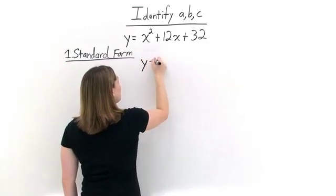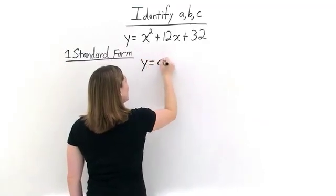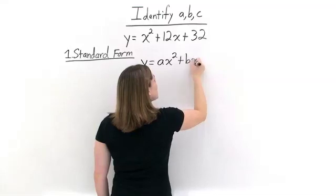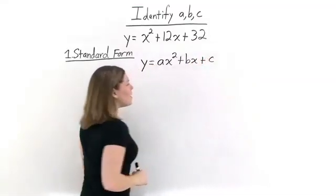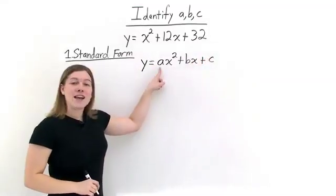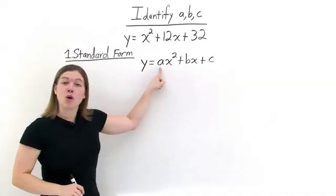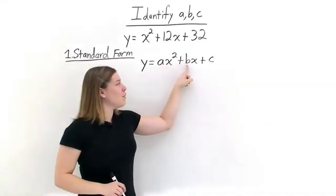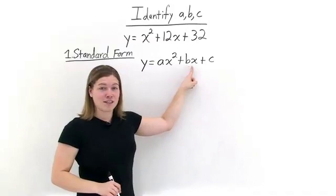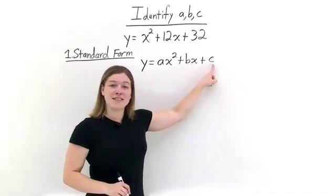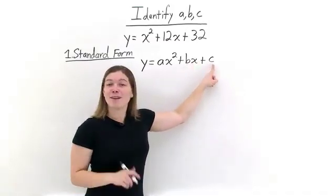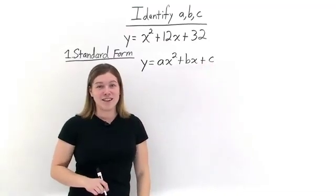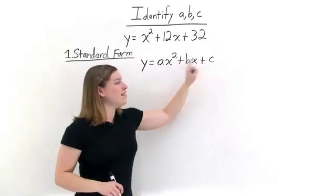Standard form looks like this. We have y equals a times x squared plus b times x plus c. Here, a is the coefficient, or the number that sits in front of x squared. b is the number or the coefficient in front of x. And c is the constant — the number that sits on the end of our equation and has no x value attached to it. That's a, b, and c.